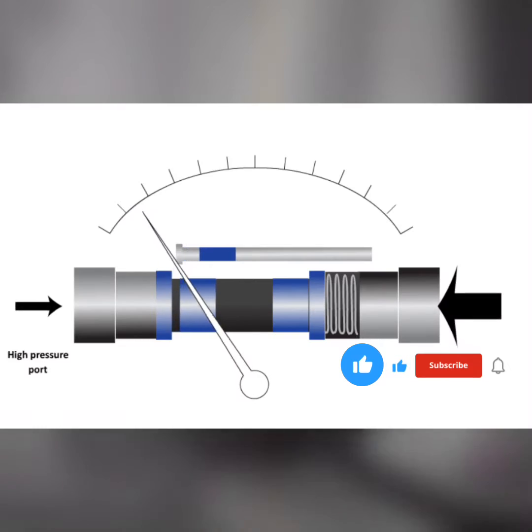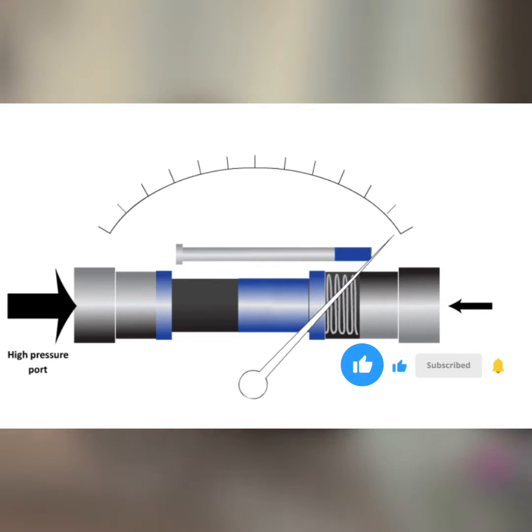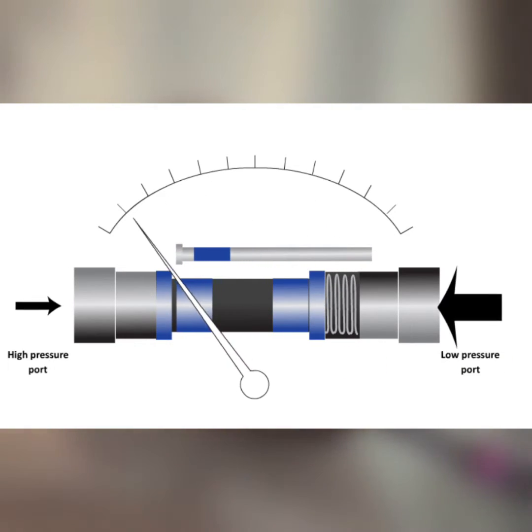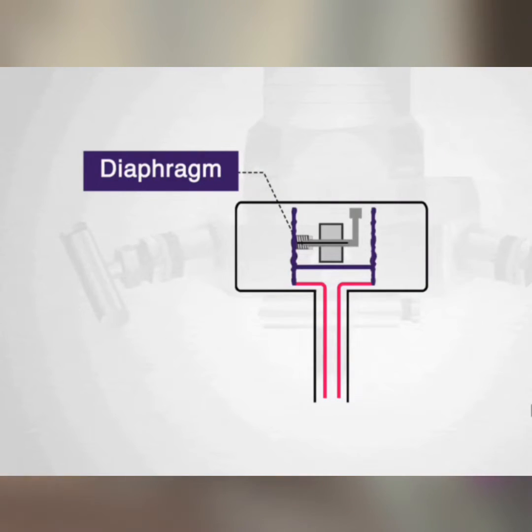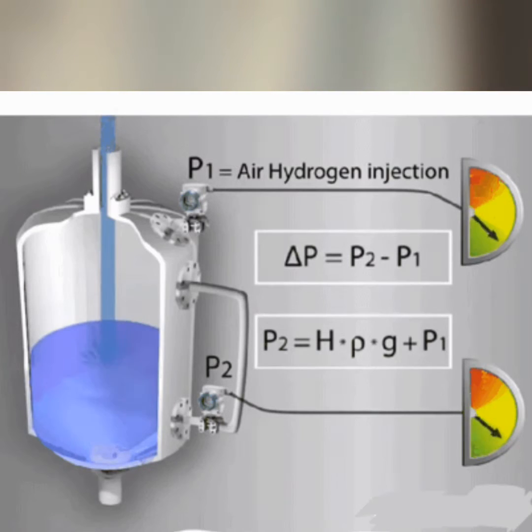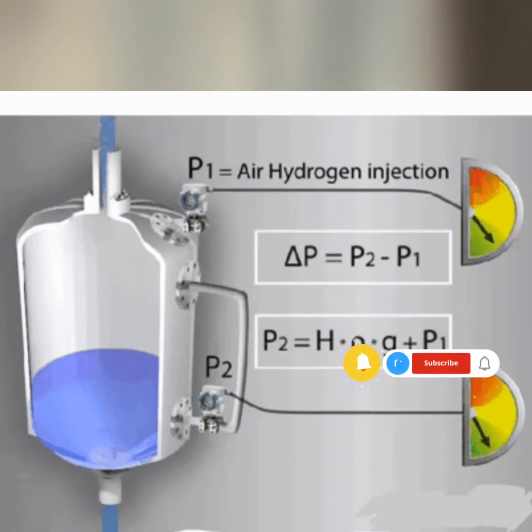Differential pressure gauges are another type. They measure the difference in pressure between two points in a system. You'll find them in applications such as air flow monitoring, filter monitoring, and fluid level measurement.